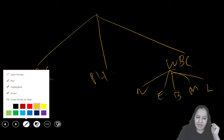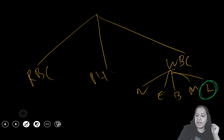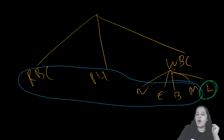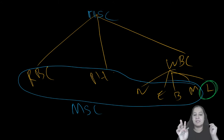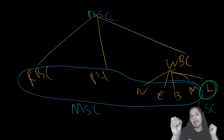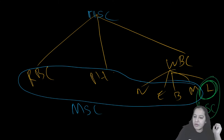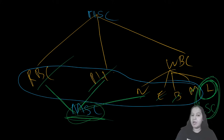Now listen carefully. From the five WBCs, just eliminate lymphocyte. Apart from lymphocyte, the rest four types of WBCs - together with platelets and RBCs - all are formed from myeloid stem cell. Lymphoid stem cell is forming only lymphocytes. Neutrophil, eosinophil, basophil, and monocyte, plus all platelets and all RBCs, are formed from myeloid stem cells. Since myeloid stem cell is forming RBCs, platelets, and maximum WBCs except lymphocytes, it is known as trilineage stem cell.